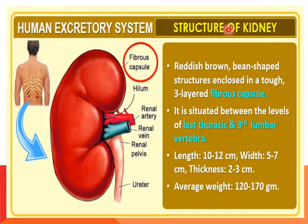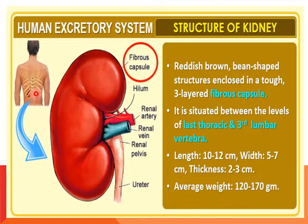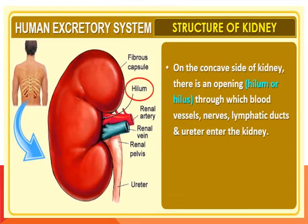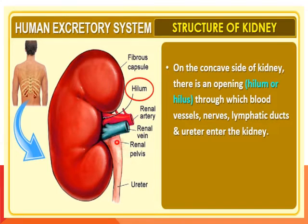The kidney is a reddish-brown, bean-shaped structure enclosed in a tough three-layer fibrous capsule. It is situated between the level of the last thoracic and the third lumbar vertebra. The length of the kidney is 10 to 12 centimeters, width is 5 to 7 centimeters, thickness is 2 to 3 centimeters, and the average weight is 120 to 170 grams. On the concave side there is an opening called the hilum or hilus, through which the renal artery, renal vein, renal nerves, lymphatic duct, and ureter enter the kidney.